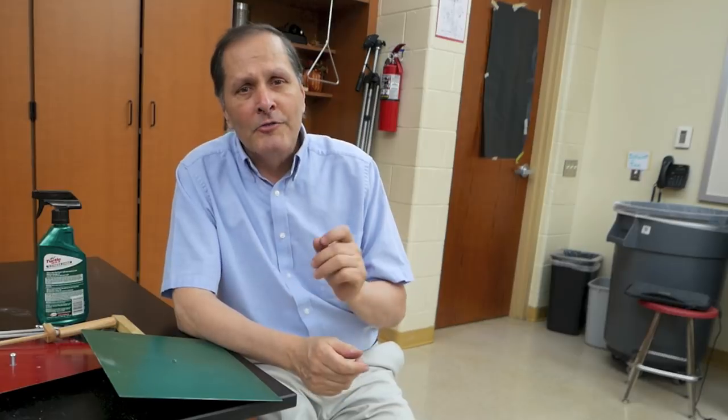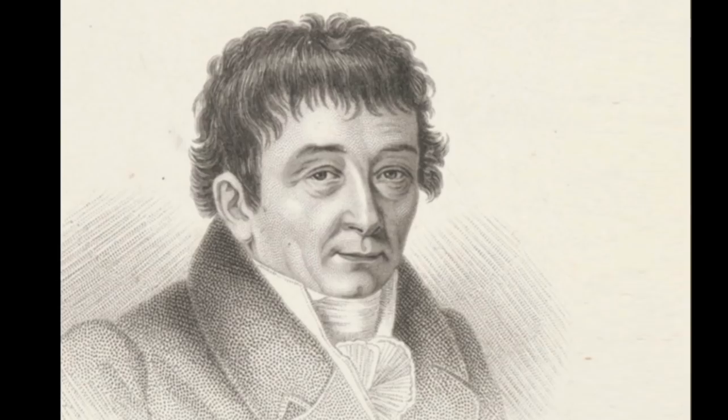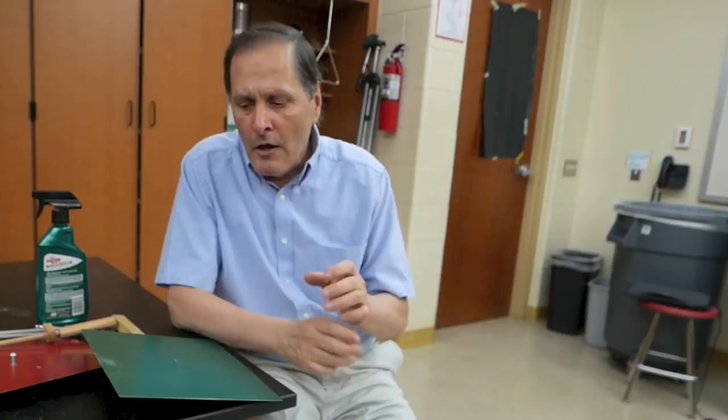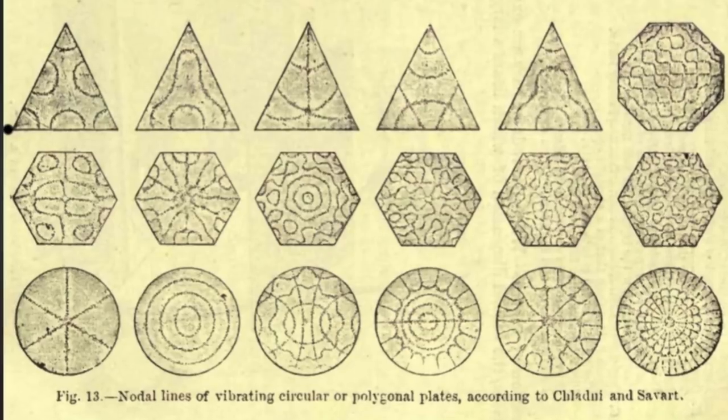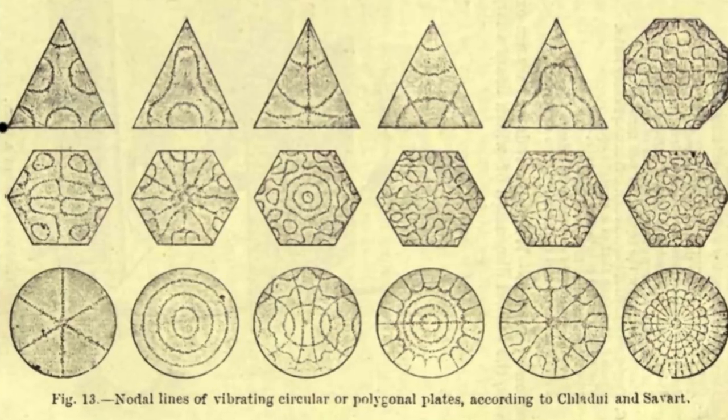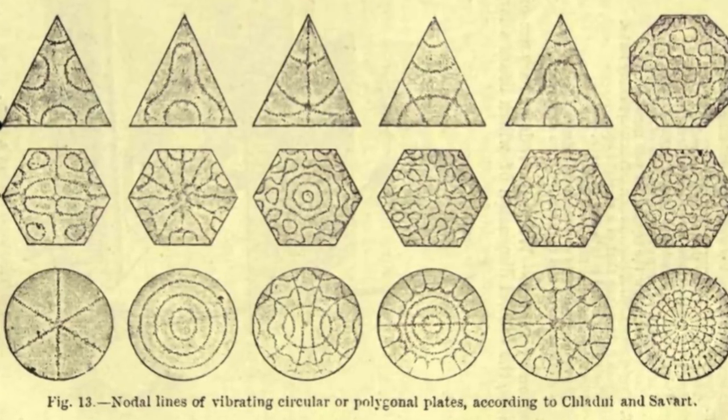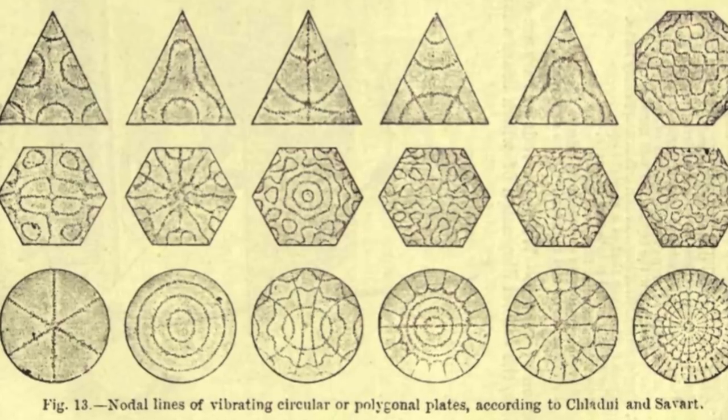Now this experiment was first done by Robert Hooke on a glass plate using flour. It was later copied by Ernst Chladni who did it on metal plates demonstrating acoustic standing waves which form various patterns which were dependent on the size, shape, density, and the frequency that was applied to the plates.